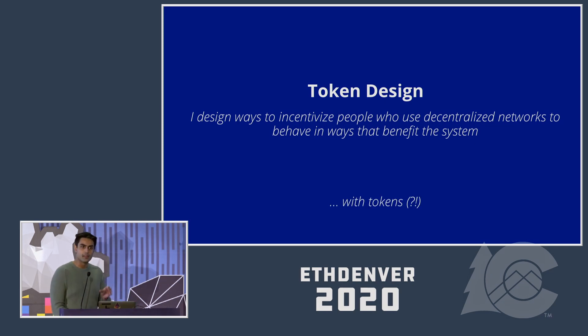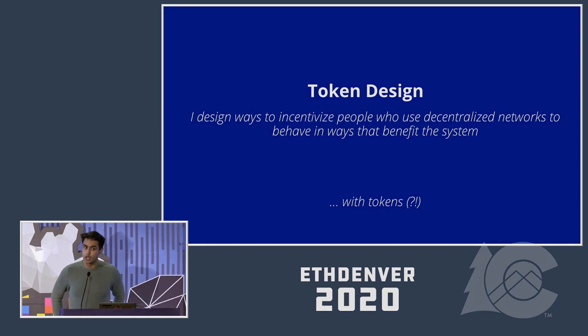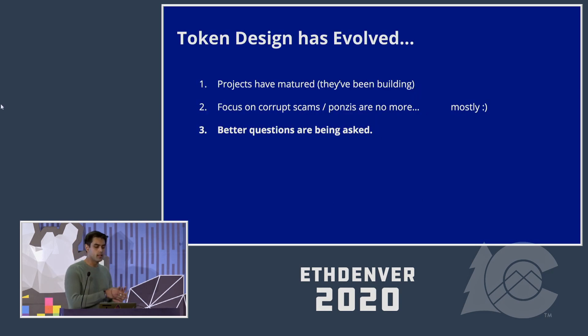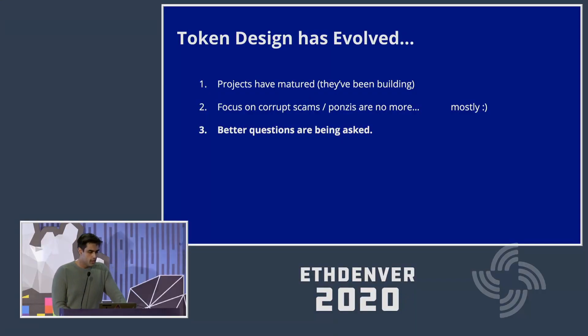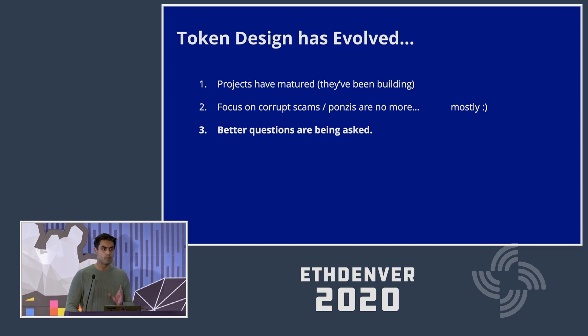I want to focus on that last point in particular, because after watching growing trends in token design and token models in general and how decentralized networks are launched, I think it's fair to say that token design has started to evolve. Looking at the key characteristics: firstly, projects are starting to mature — they're building infrastructure that people can use, interfaces that make sense and are intuitive for a user.